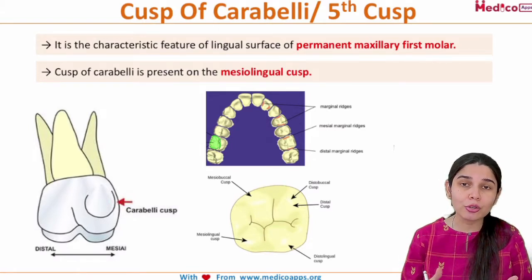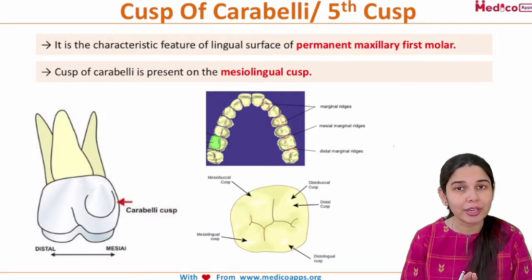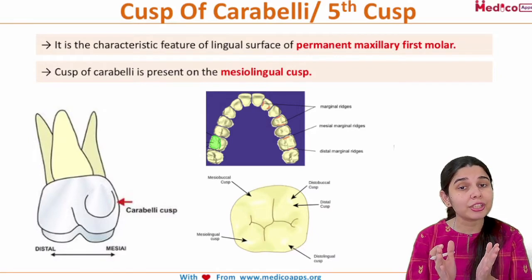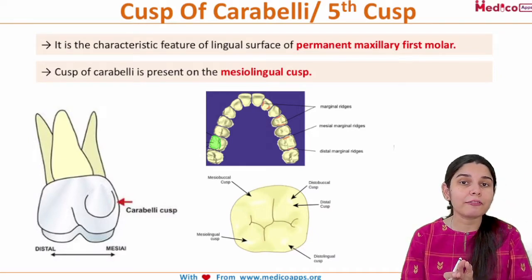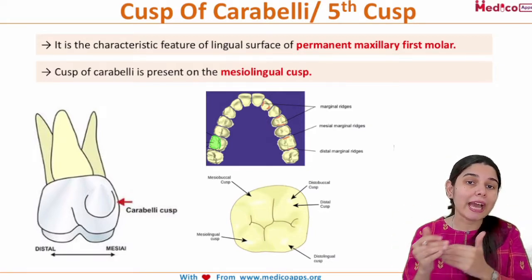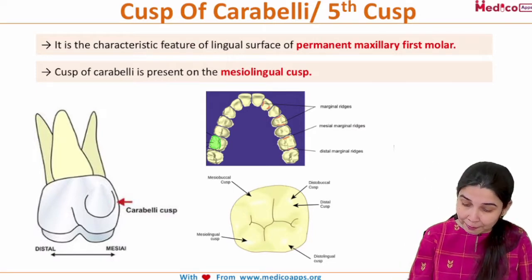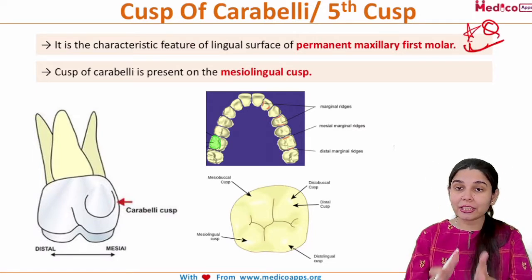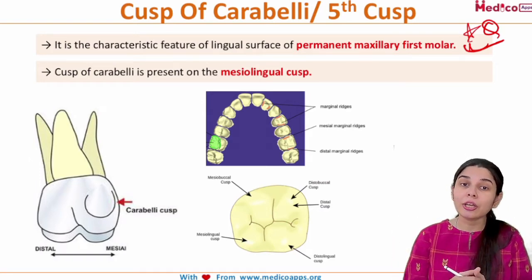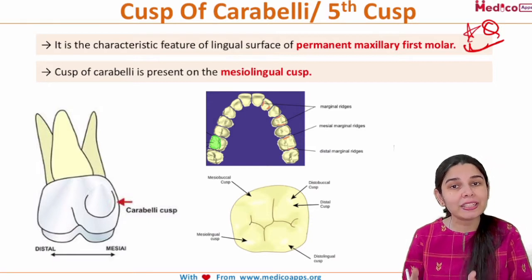The Cusp of Carabelli is also known as the fifth cusp — you will understand why we call it the fifth cusp in this video lecture. Basically, the Cusp of Carabelli is a characteristic feature seen on the lingual surface, meaning towards the tongue area. So the Cusp of Carabelli, or the fifth cusp, is seen on the lingual surface of the permanent maxillary first molar.